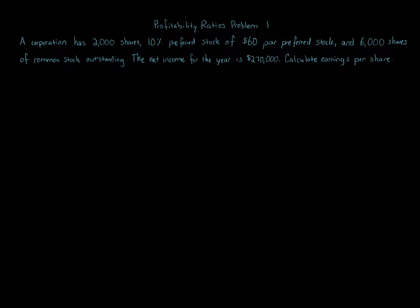Profitability ratio problem one. A corporation has 2,000 shares, 10% preferred stock of $60 par preferred stock, and 6,000 shares of common stock outstanding. The net income for the year is $270,000. Calculate earnings per share.